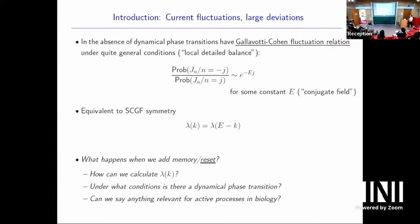The key questions I'm interested in: how does this large deviation picture change if we go away from a straightforward Markov process — perhaps with memory, or with reset, which in some cases is connected to memory? Is there still a large deviation principle? How do we calculate things? I'm going to concentrate on the case of reset, think about how we get the SCGF, and under what conditions there might be a dynamical phase transition. And the overarching question: is any of this relevant for active processes in biology?